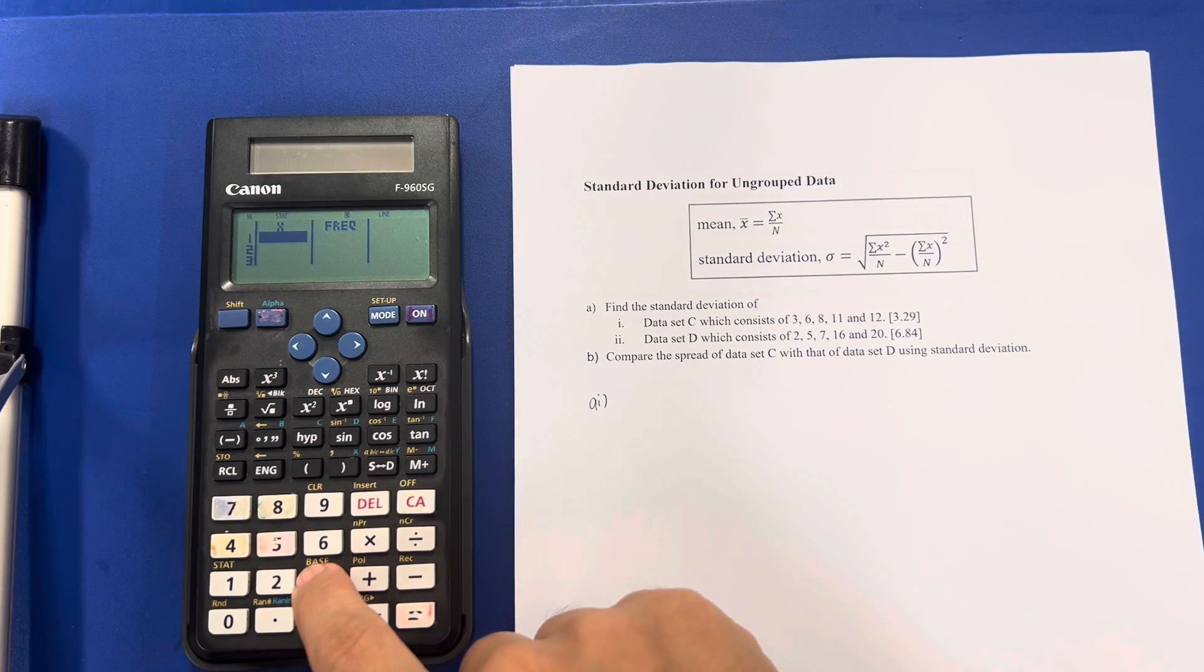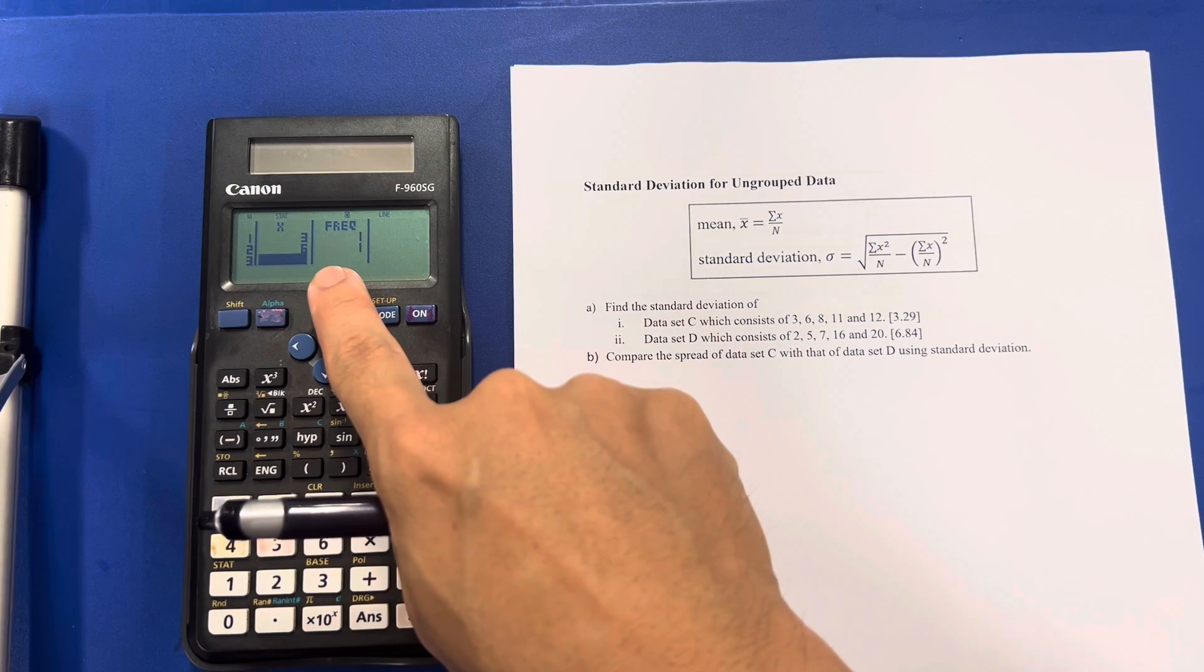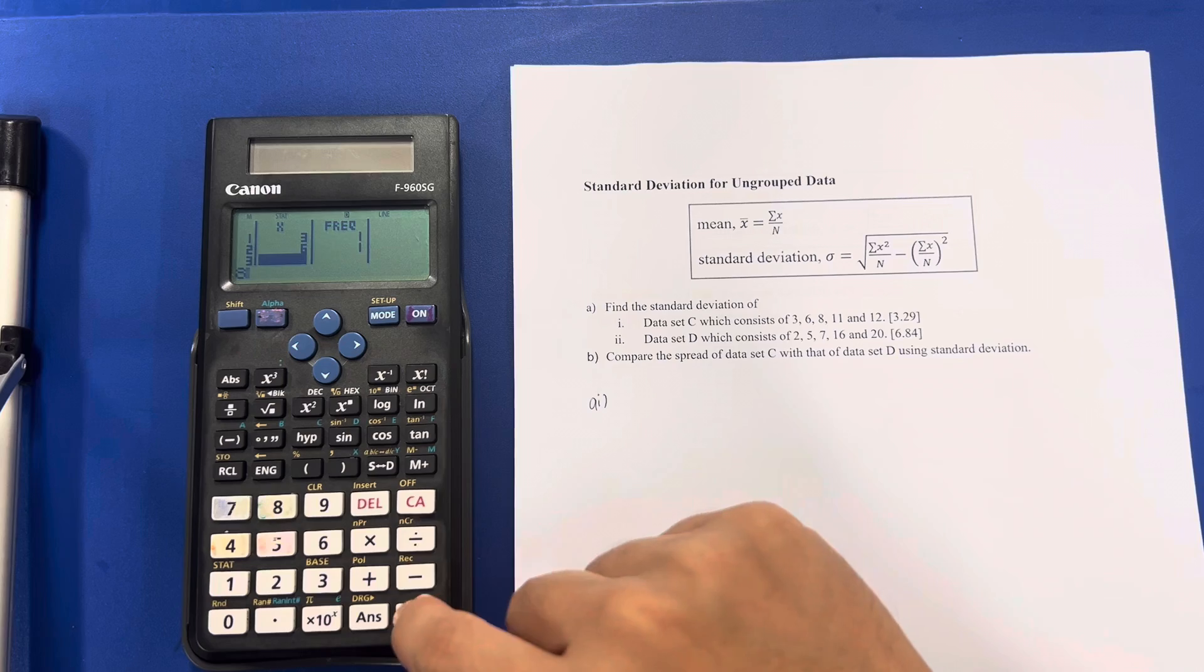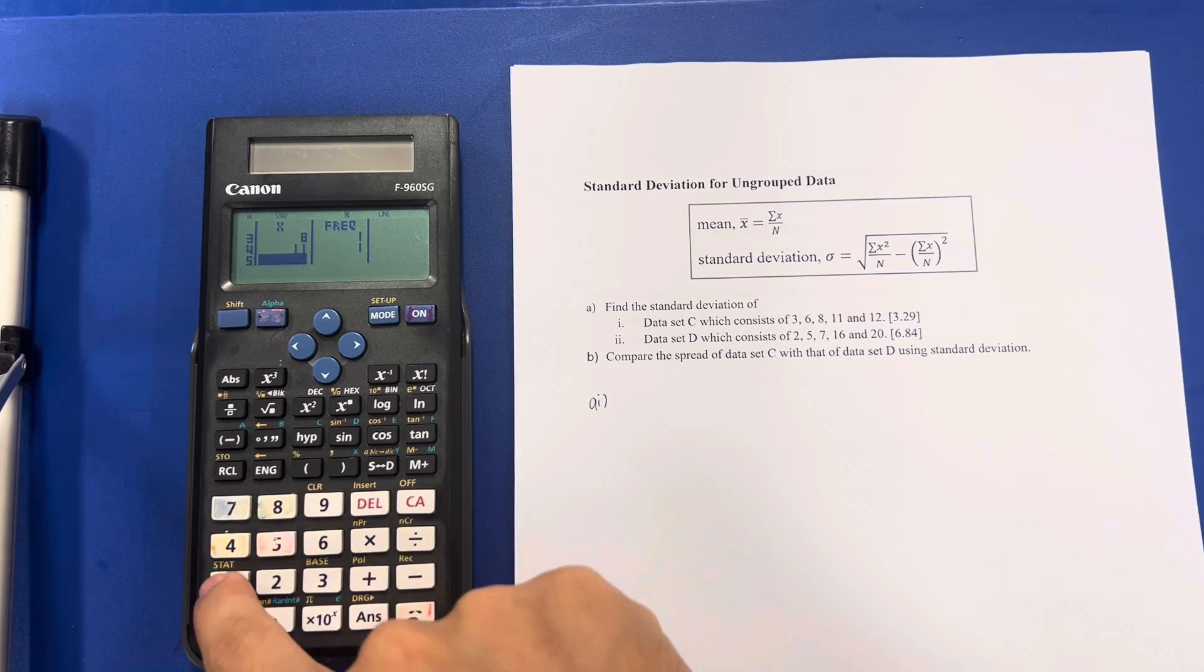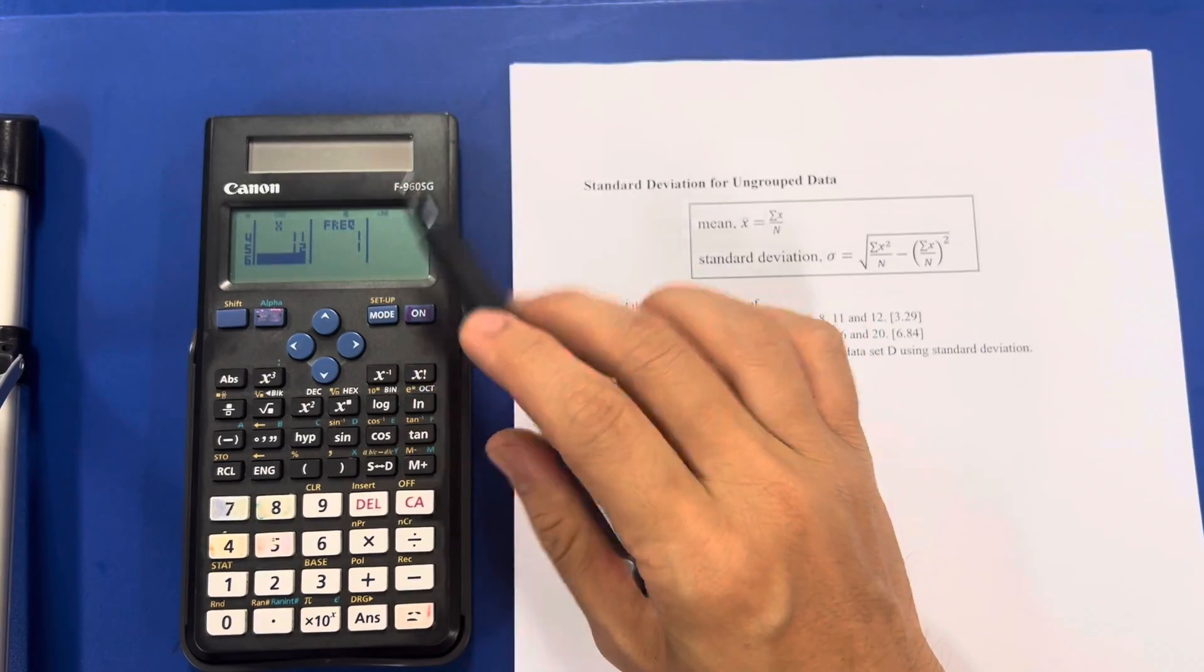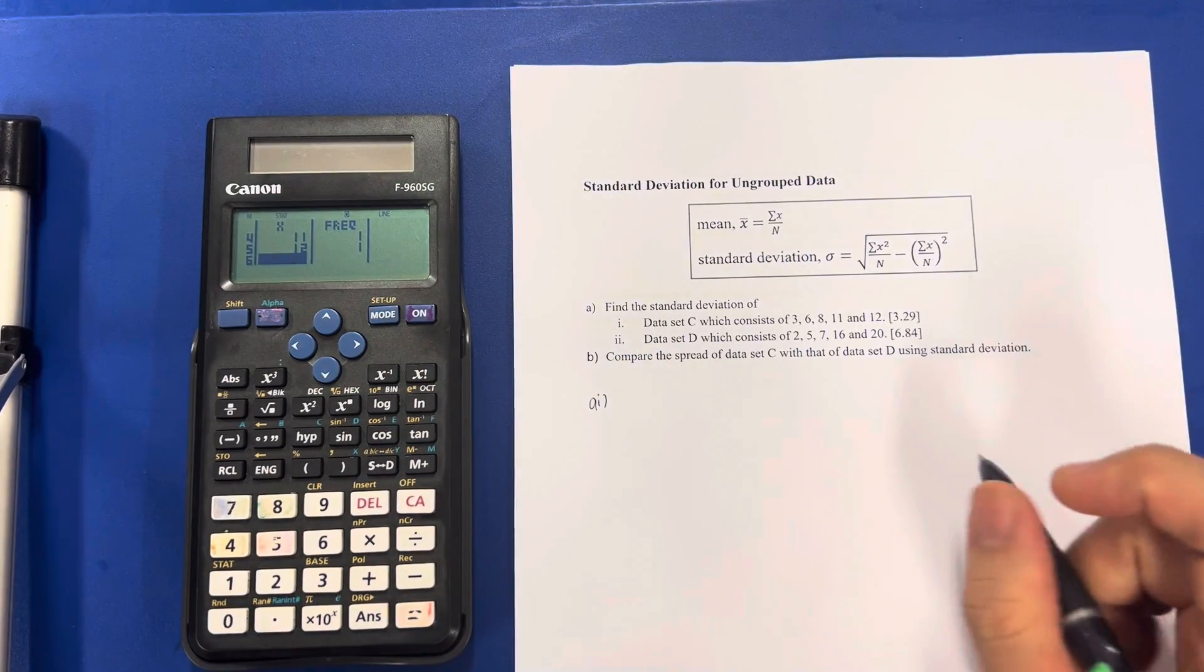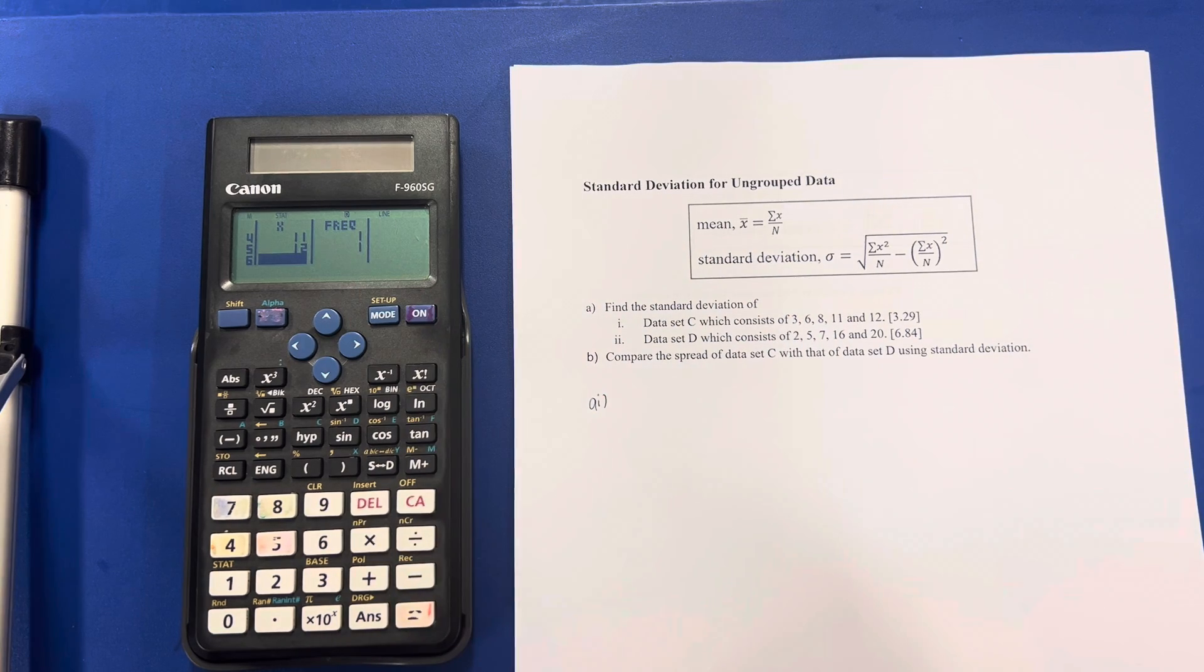So my X will be 3, 6, press equal to key in, 8, 11, and 12. And that's 1 of damage, so it's fine to have the frequency table. Alright, once we have successfully keyed in the data into the calculator, press CA.